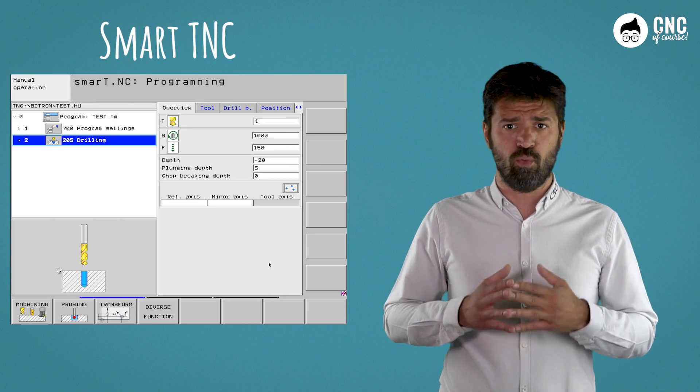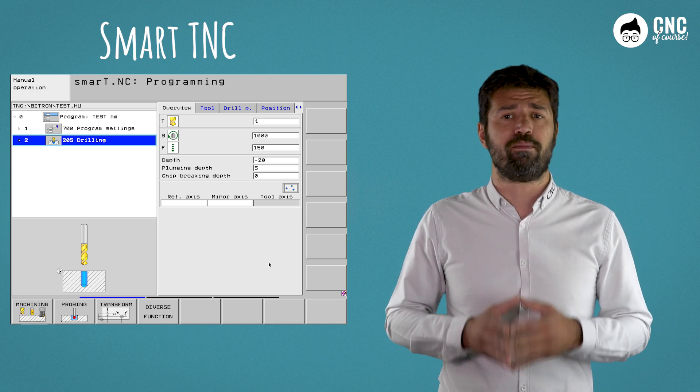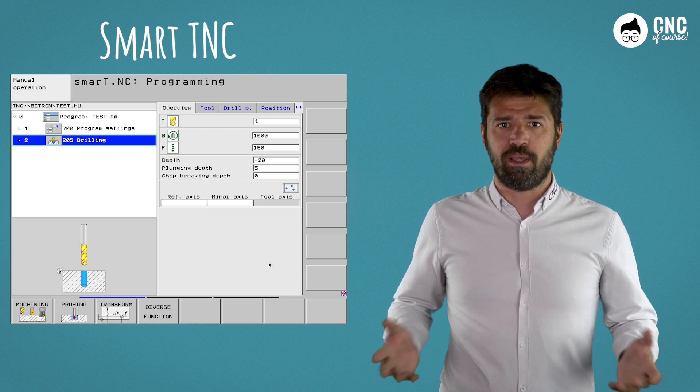Or on a 530 control, you can also use Smart TNC, which is again conversational but further simplified. It can also be used in combination with Klartext programming and basically allows you to group program parts into actual work steps called units.